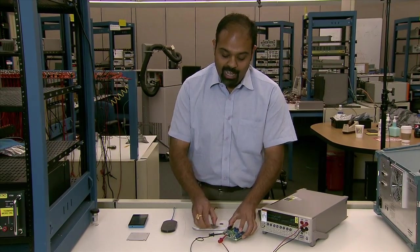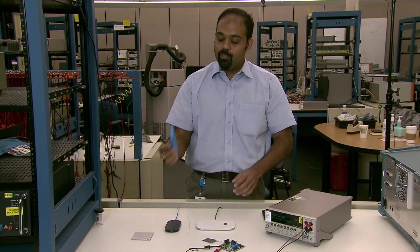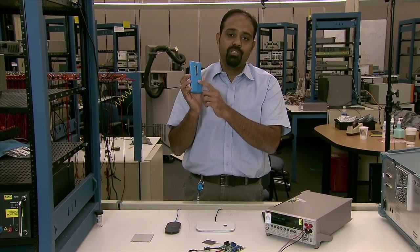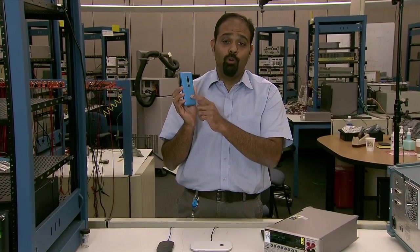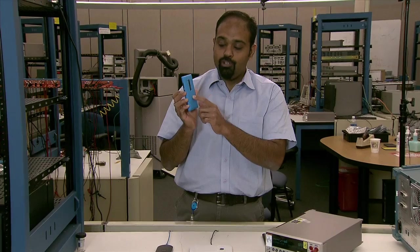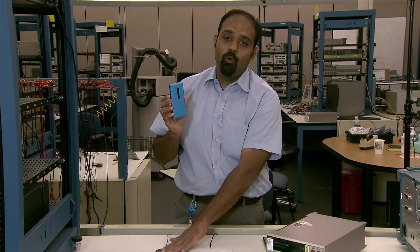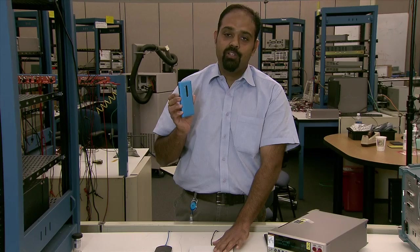Now, let me show you what happens when we integrate this in the phone. What we have taken is a commercially available Nokia Lumia phone and retrofitted it with one of our dual-mode receiver ICs. I will show you the same phone working on both the WPC and the PMA compliant transmitters.